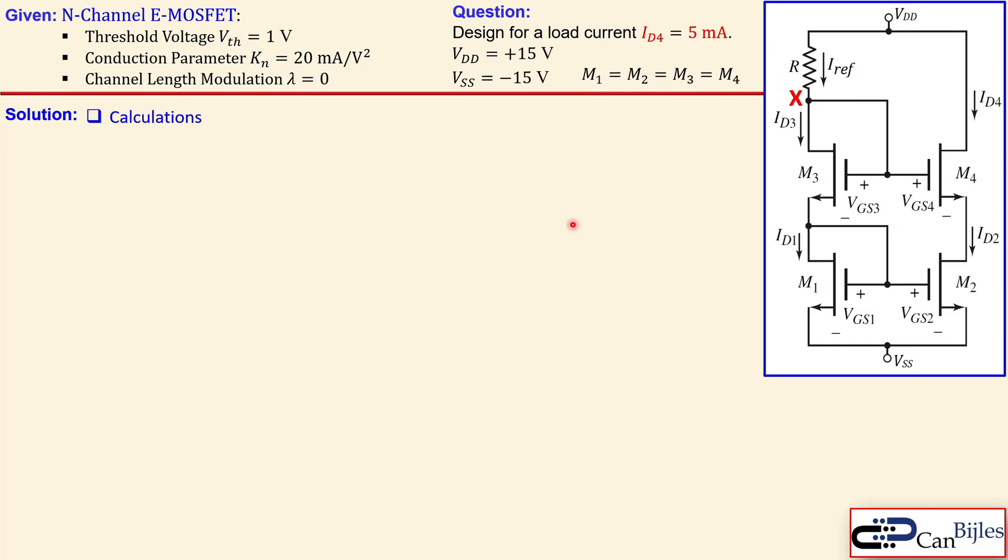Before we move on, let's designate the nodes where we set up the equations, node X and node Y here. Now we set up Kirchhoff's current law, KCL, at node X. That will mean IREF will be ID3, actually plus also this current, but since the gate currents are zero, we have only this expression: IREF is equal to ID3.